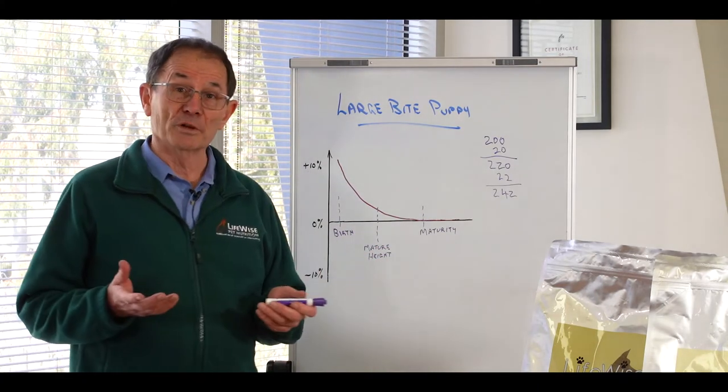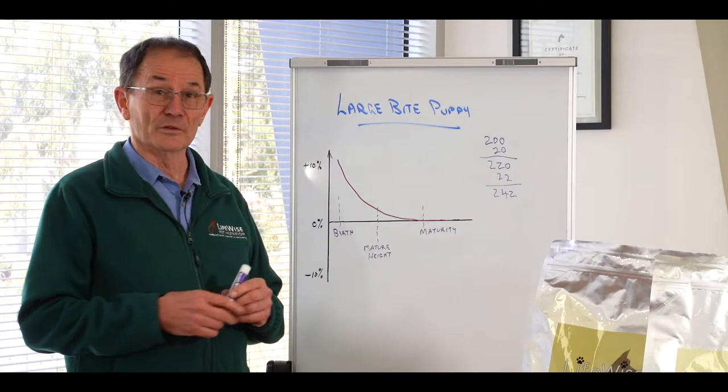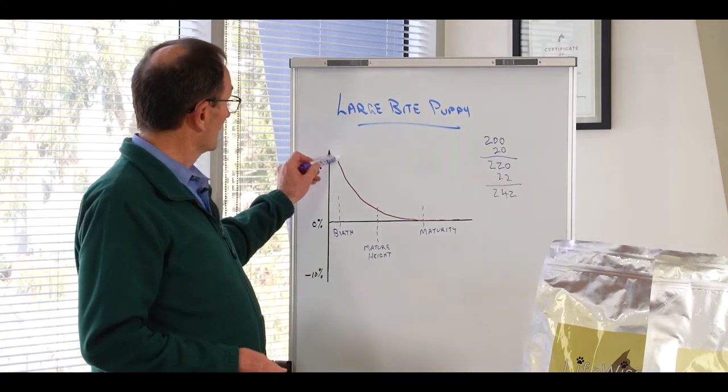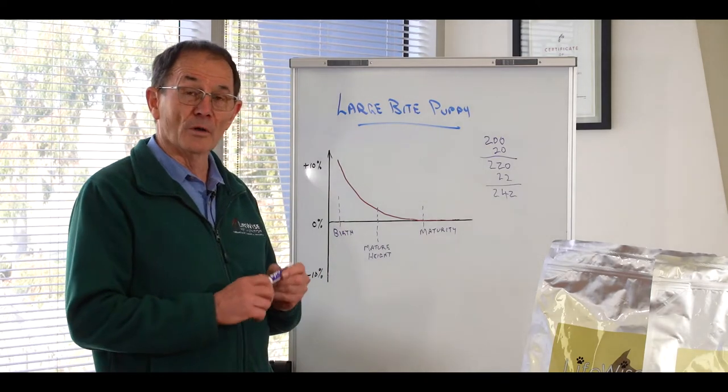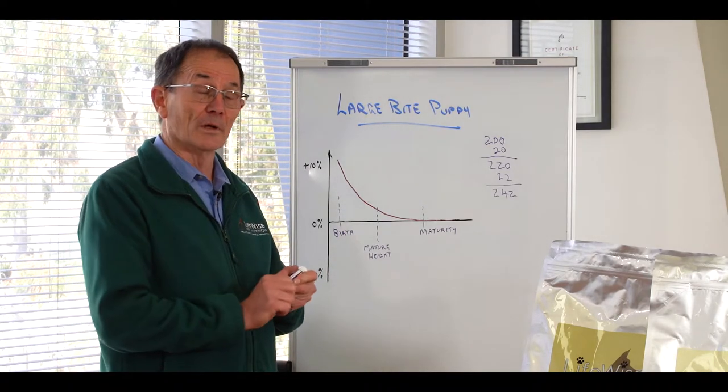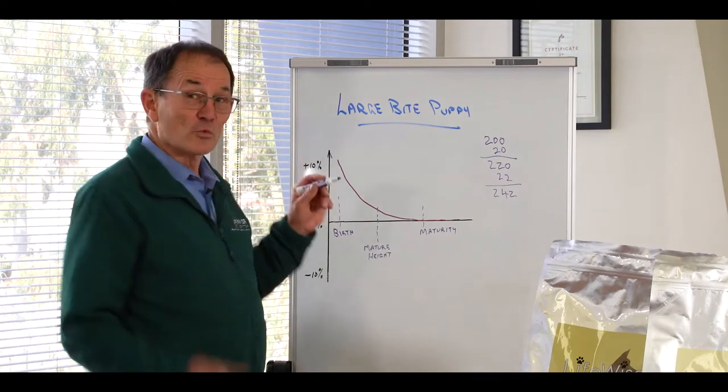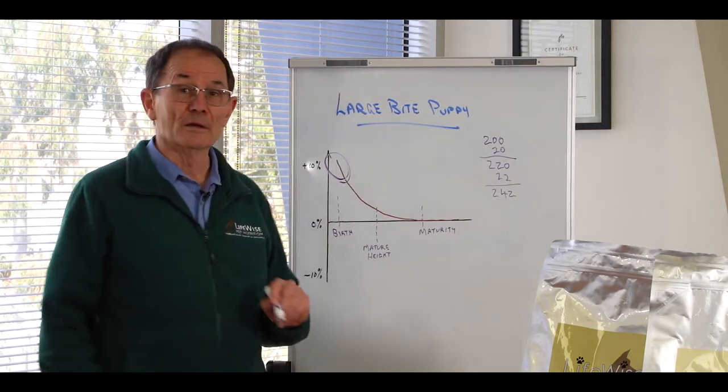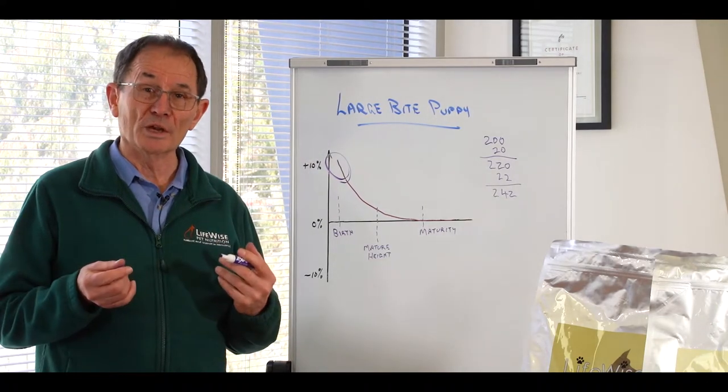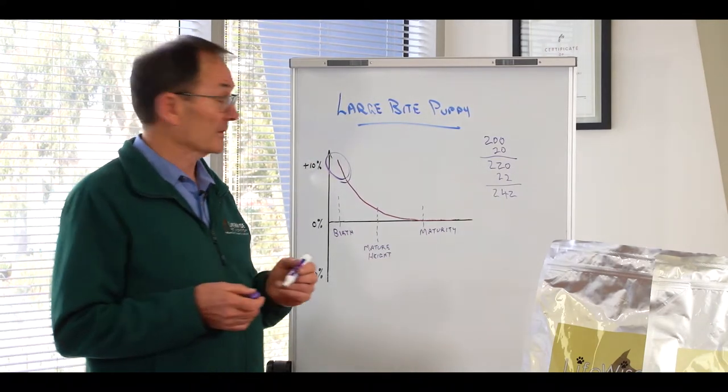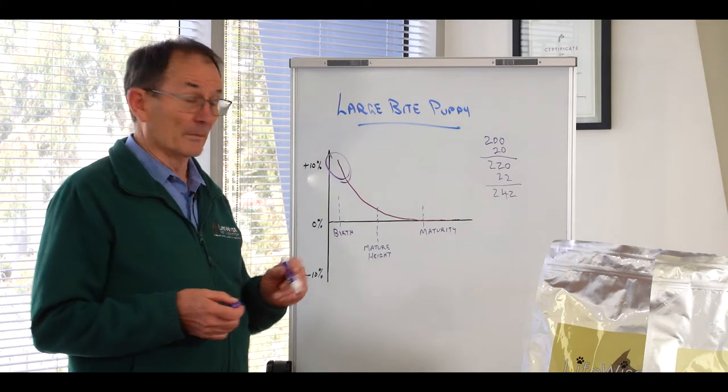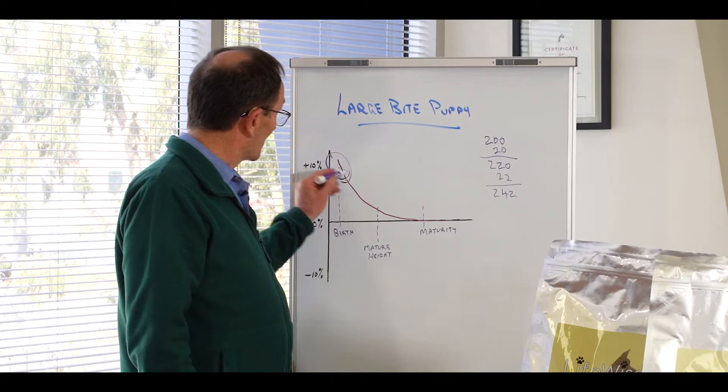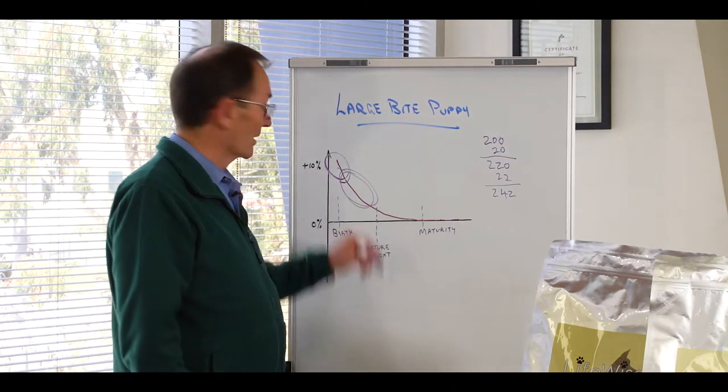But for that large breed pup like the German Shepherd sure we'd want to start him right back up here on the small breed puppy food because that really is designed to cater for dogs that are being weaned, it's a true weaning diet, and then our medium-sized food takes over and it's really handy in this area.